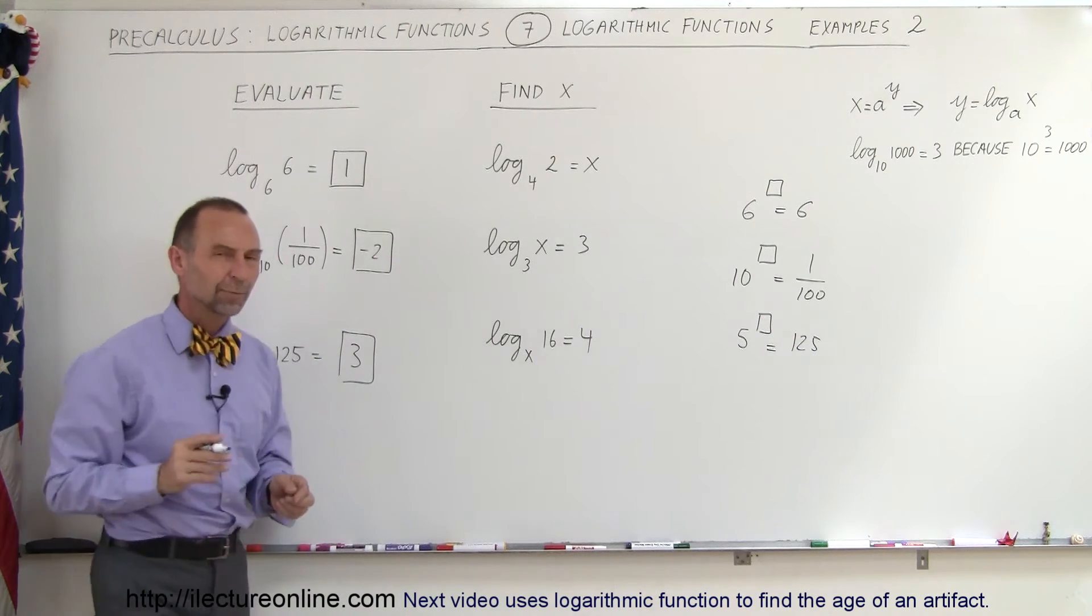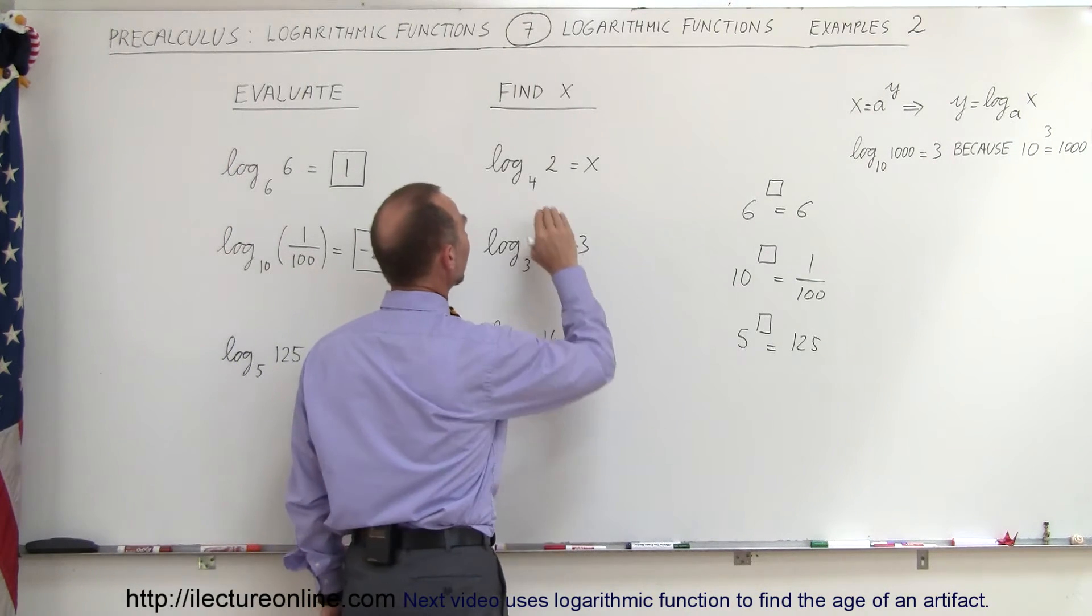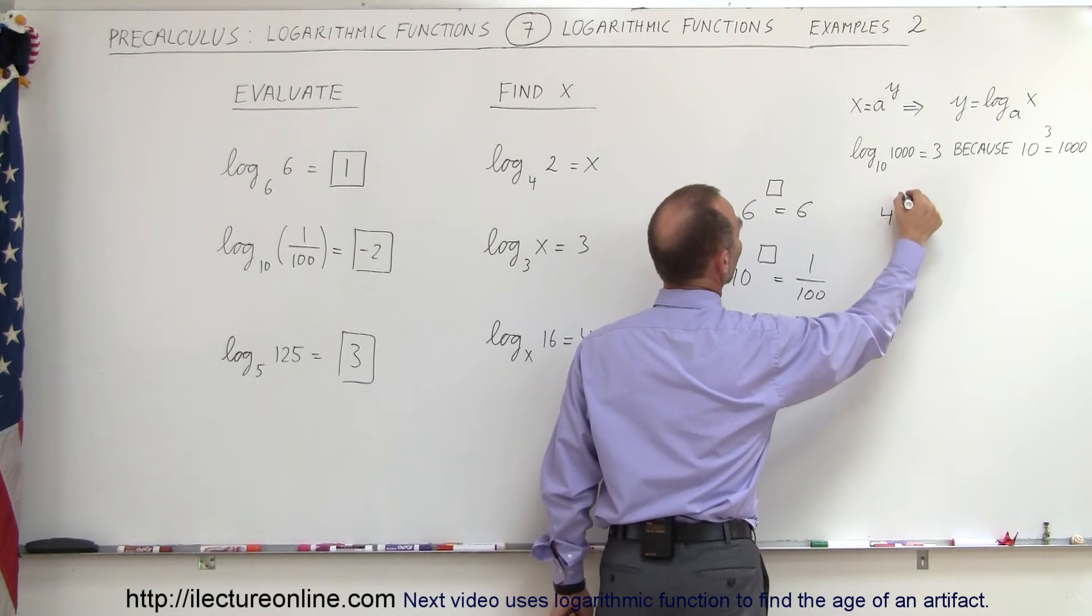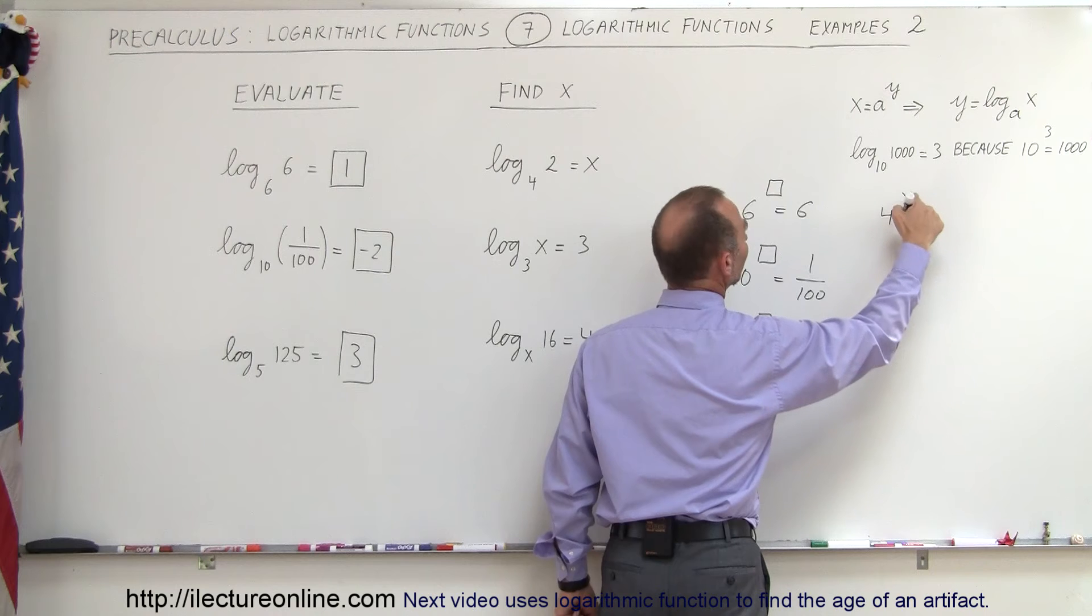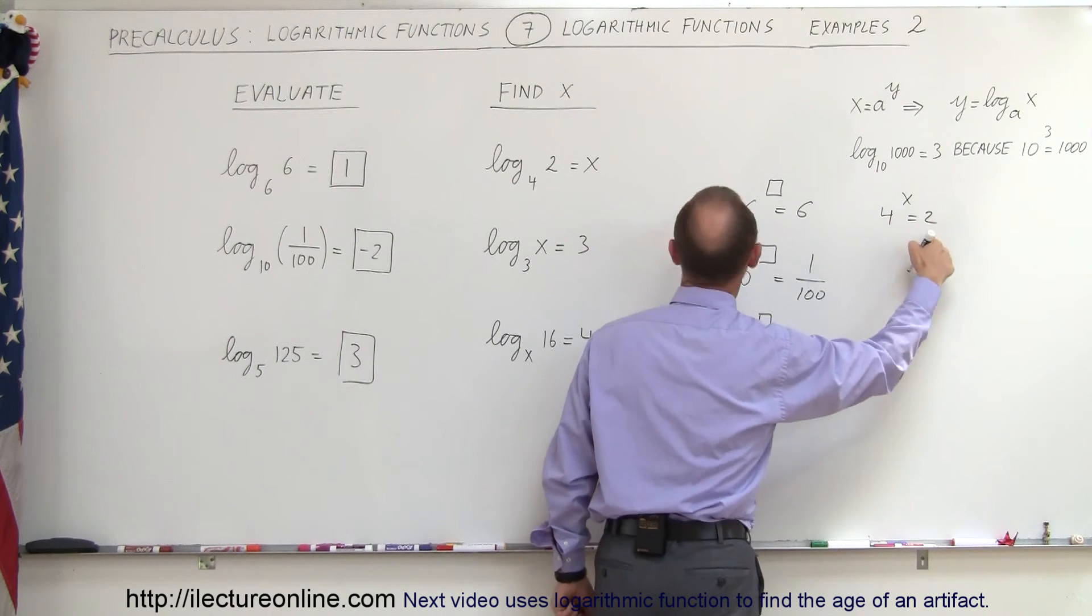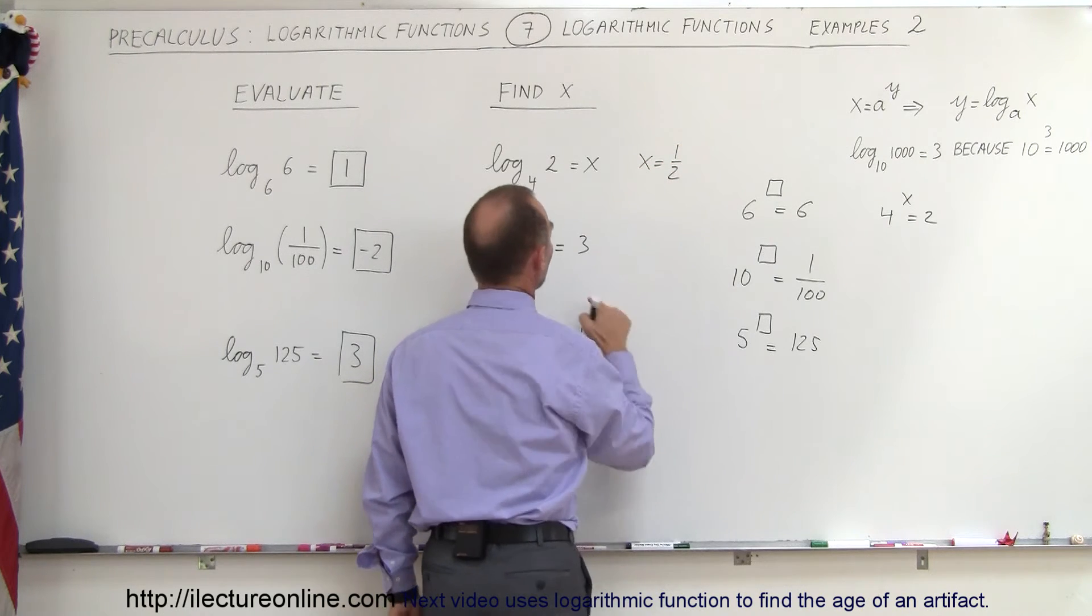Pretty straightforward. We do the same over here. Again we take the base, raise to this number we get 2. So we take the base, raise to the x power, we get 2. That means x must equal 1 half, because 4 to the 1 half power equals 2, so therefore x equals 1 half.